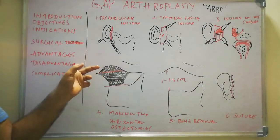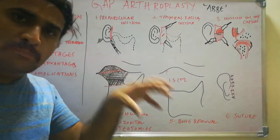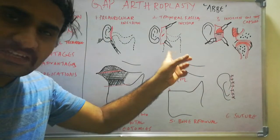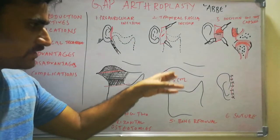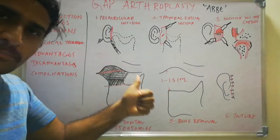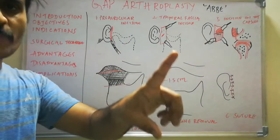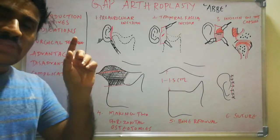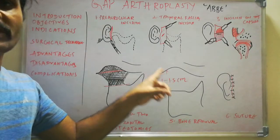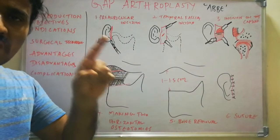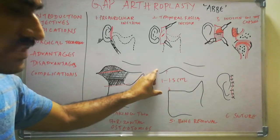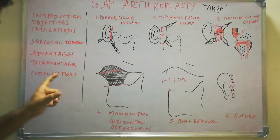Coming to the advantages, gap arthroplasty is a simpler and quicker technique compared to interpositional arthroplasty. The main disadvantage is the higher chance of re-ankylosis, because nothing is interposed between the surfaces — especially if the 1 to 1.5 cm gap is not adequately created.